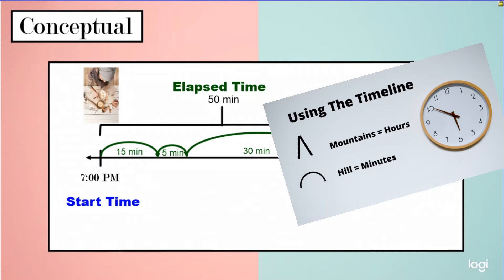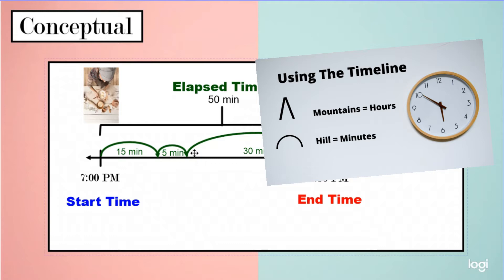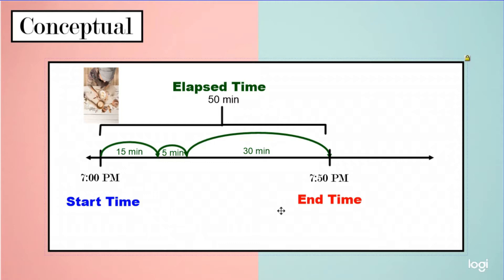We showed this on our number line using our hills and mountains. Mountains are worth an hour, so when you put an hour down on the number line you use a mountain. We're not getting into mountains yet because right now we're staying within the hour. Our minutes are our hills — you're drawing an arc, a hill, on your number line, and it can be one minute, two minutes, five minutes, ten minutes. In our problem we used a 15-minute hill, a 5-minute hill, and a 30-minute hill — we broke apart our elapsed time into three different time intervals.